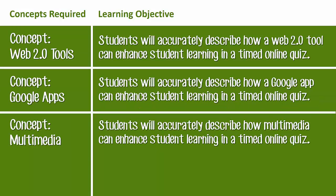I'm at an advantage with this learning outcome because my first three concepts are really in the same format and can be answered the same way. Since they're related, I'll put them all in that timed online quiz, and I'll be able to tell that they can describe each of these, showing they've met the understanding level of Bloom's Taxonomy.